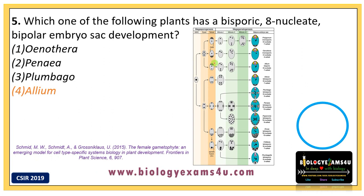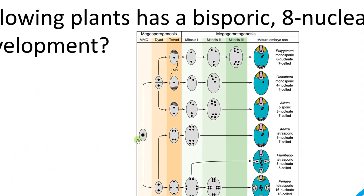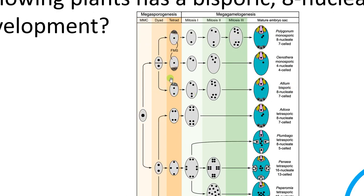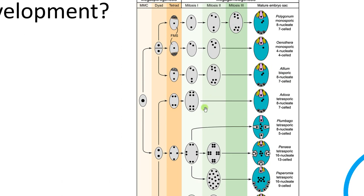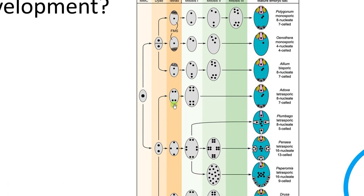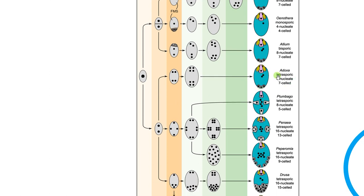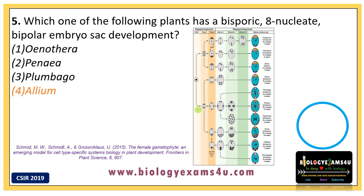Let me zoom in. The megaspore mother cell divides to form two cells. If only one cell remains and all others degenerate, it is called monosporic — for example, Polygonum type and Oenothera. If two cells remain and two degenerate, it is called bisporic — that is Allium, bisporic. At the final stage this embryo sac is eight-nucleate and seven-celled. If all four cells remain intact, it is called tetrasporic.